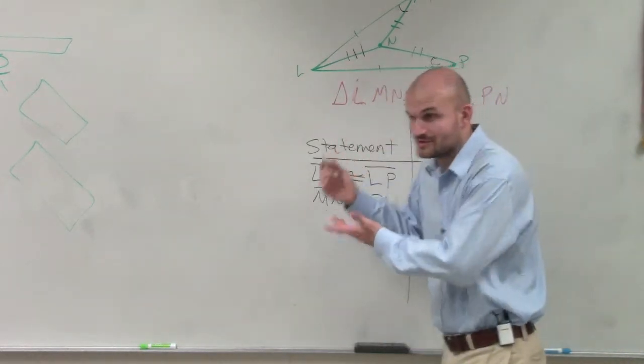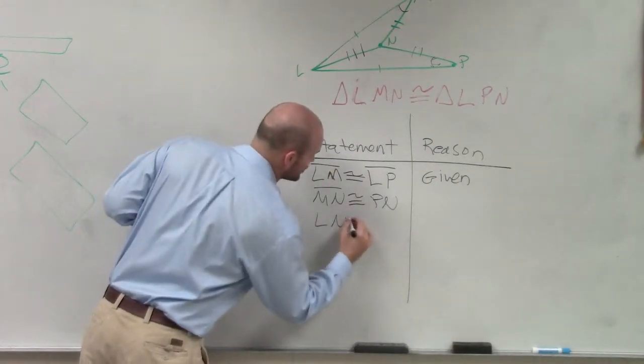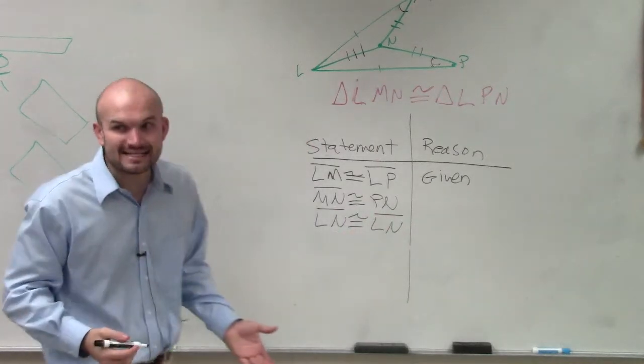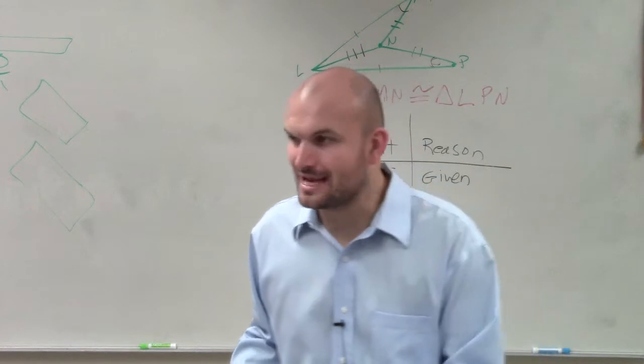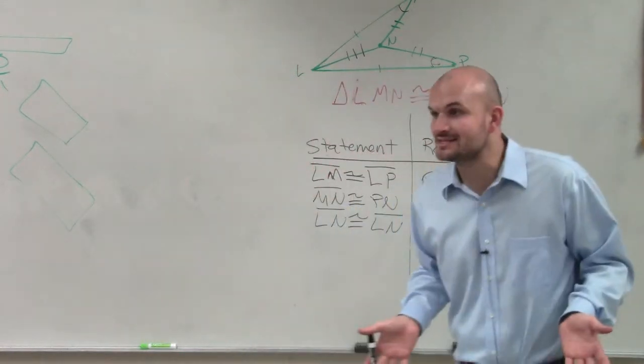Same measurement for both triangles. So therefore, you can say that LN is congruent to LN. It's the same exact side, so that has to be equal, right? You can't say something's exactly the same and then say they have different measurements. If it's the same line, it's the same line.